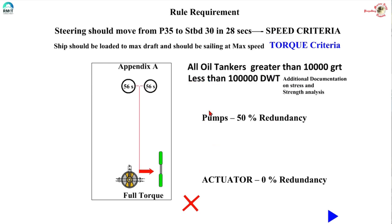Moving on to tankers greater than 10,000 GRT and less than 100,000 DWT. The minimum redundancy criteria is 50 percent for the pumps and 0 percent for the actuator, as in the previous case. Two pumps, each capable of turning the rudder in 56 seconds, together meet the 28-second requirement. If one pump is gone, it becomes 56 seconds — which is just 50 percent of the criteria. So: 50 percent pump redundancy and 0 percent actuator redundancy.